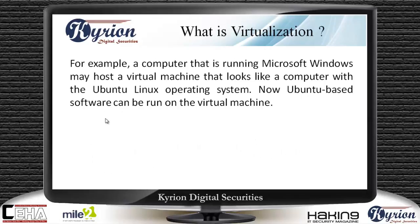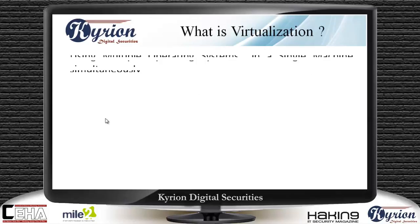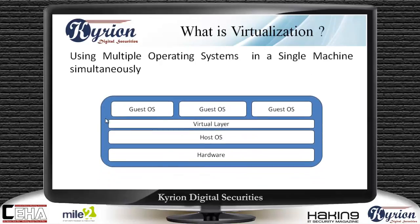For example, a computer running Microsoft Windows may host a virtual machine that looks like a computer with Ubuntu Linux. Ubuntu-based software can be run on that virtual machine. A logical definition of a virtual machine is using multiple operating systems in a single machine simultaneously.